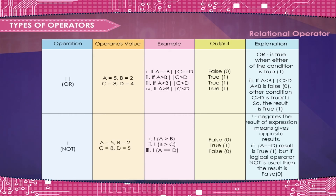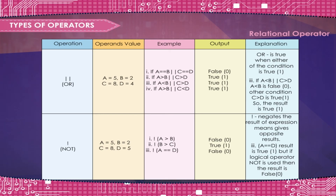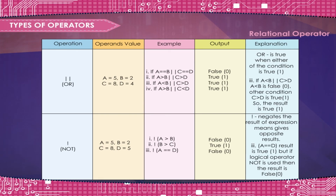Exclamation (!) negates the result of an expression, meaning it gives the opposite result. Not: A is equal to 5, B is equal to 2, C is equal to 8, D is equal to 5. Example 1: Not A greater than B — False, 0. Example 2: Not B greater than C — True, 1. Example 3: Not A is equal to D. A is equal to D, result is true, 1. But if logical operator not is used, then the result is false, 0.